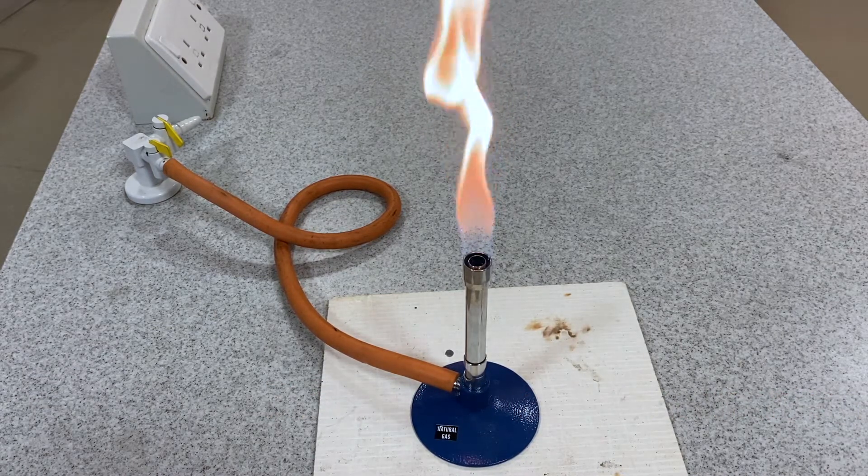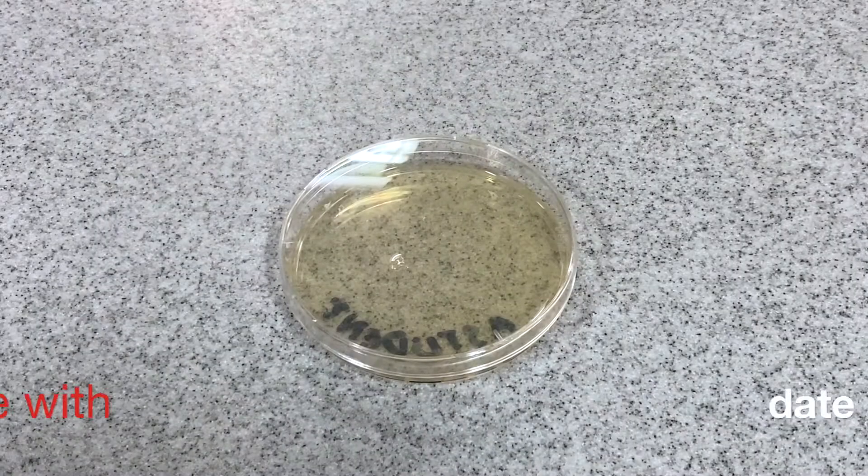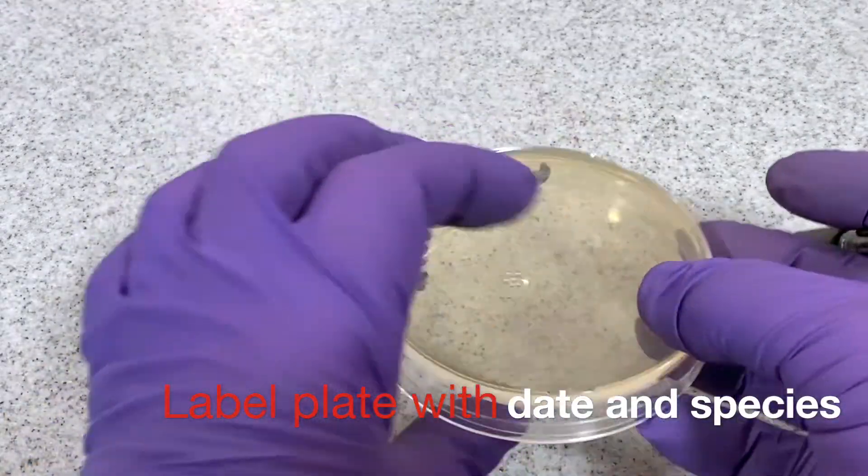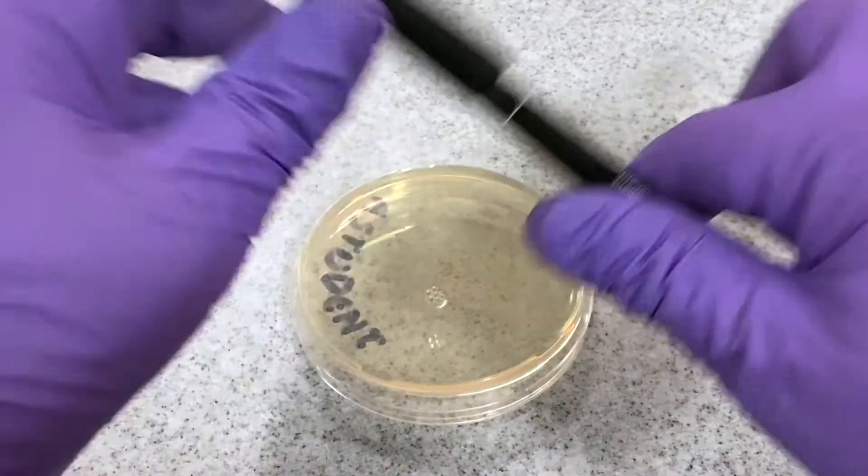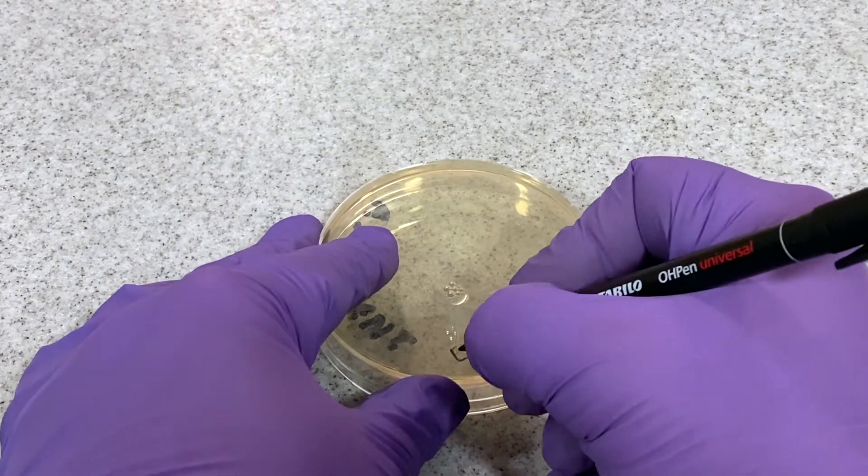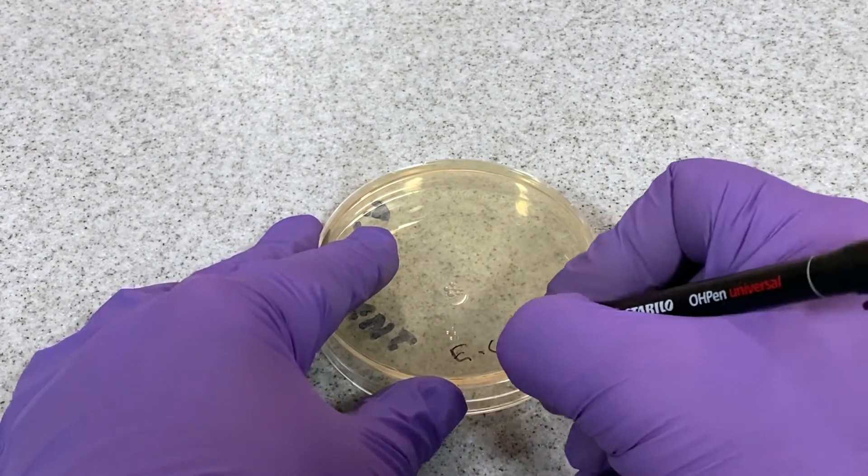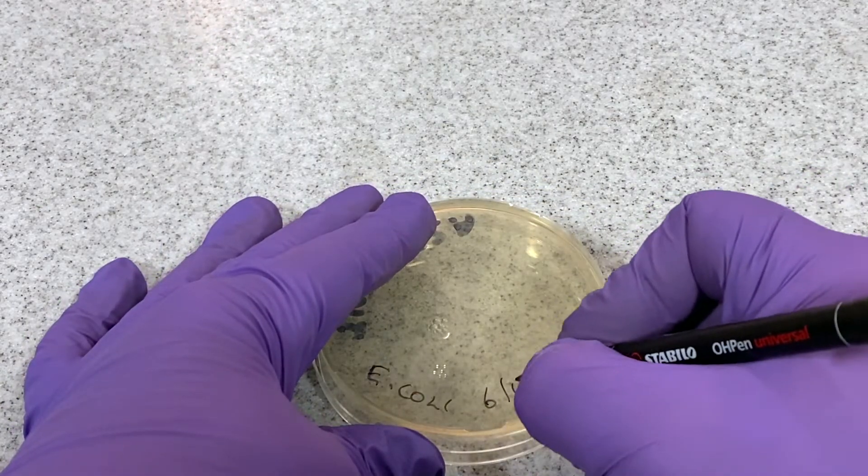During this activity, leave the Bunsen burner alight on a luminous flame. This will prevent any settling of contaminants. Before introducing the bacteria sample to the agar medium, label the plate with the date and the type of bacteria used in the culture.